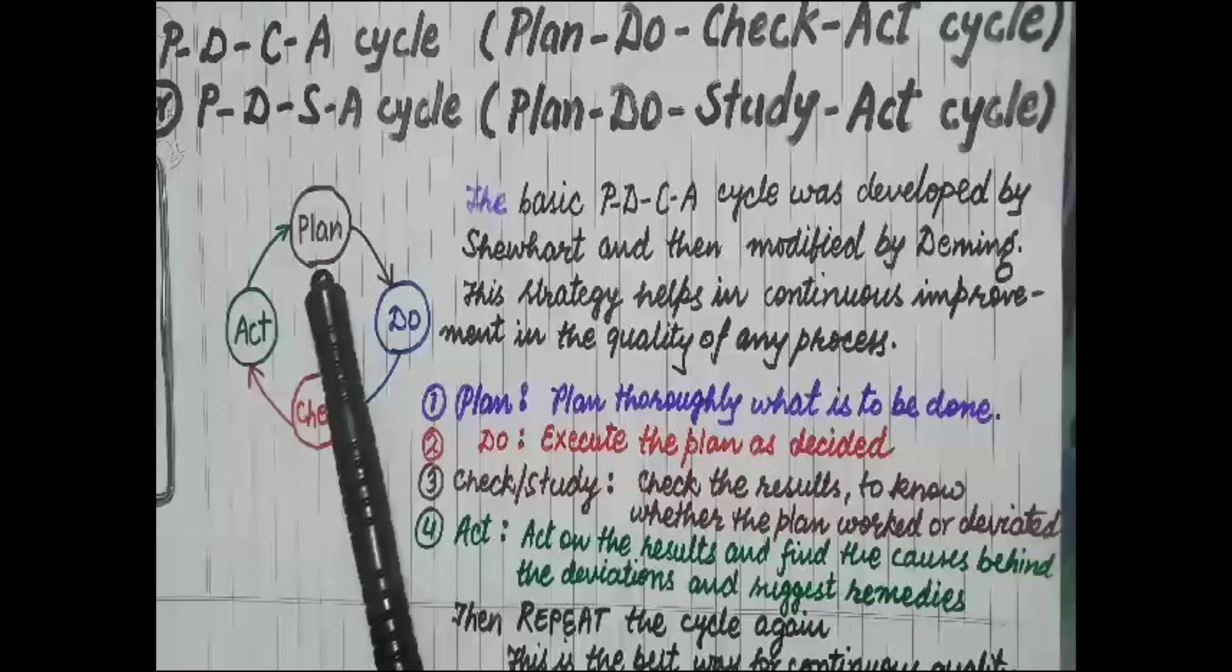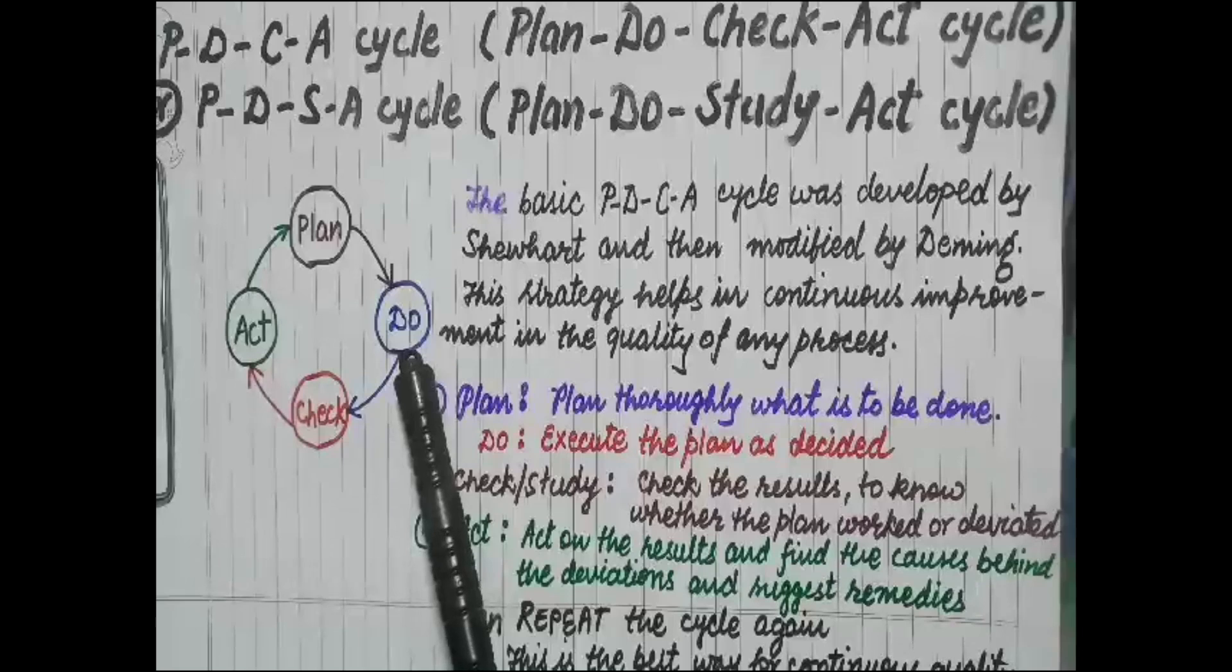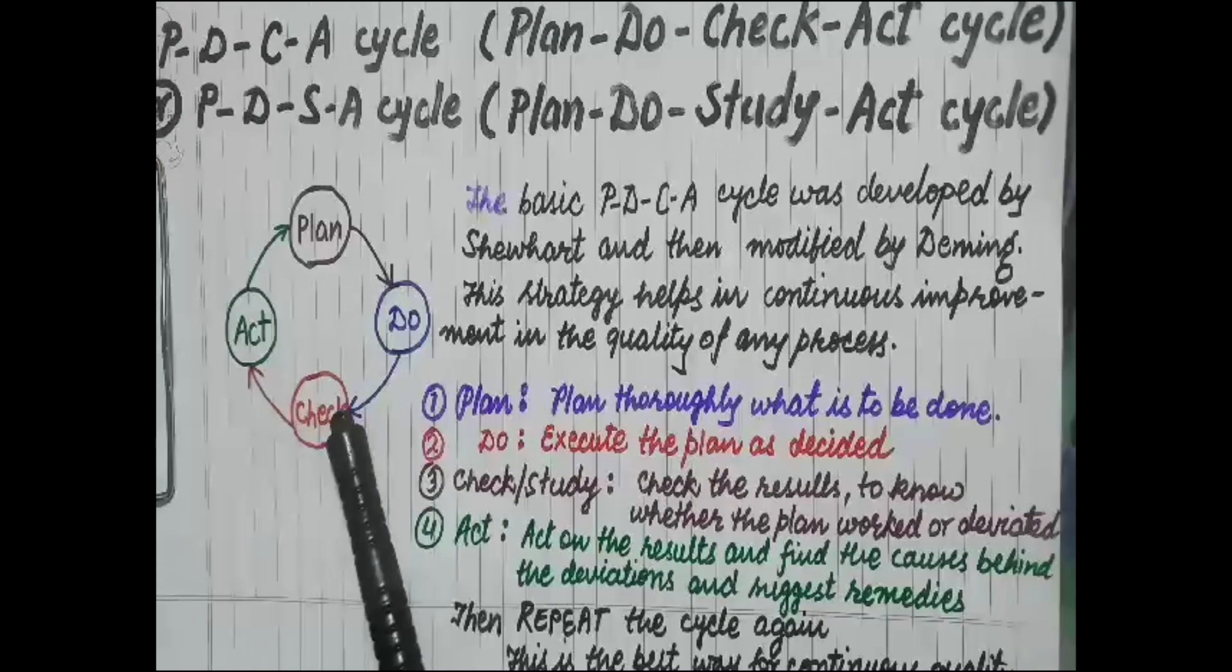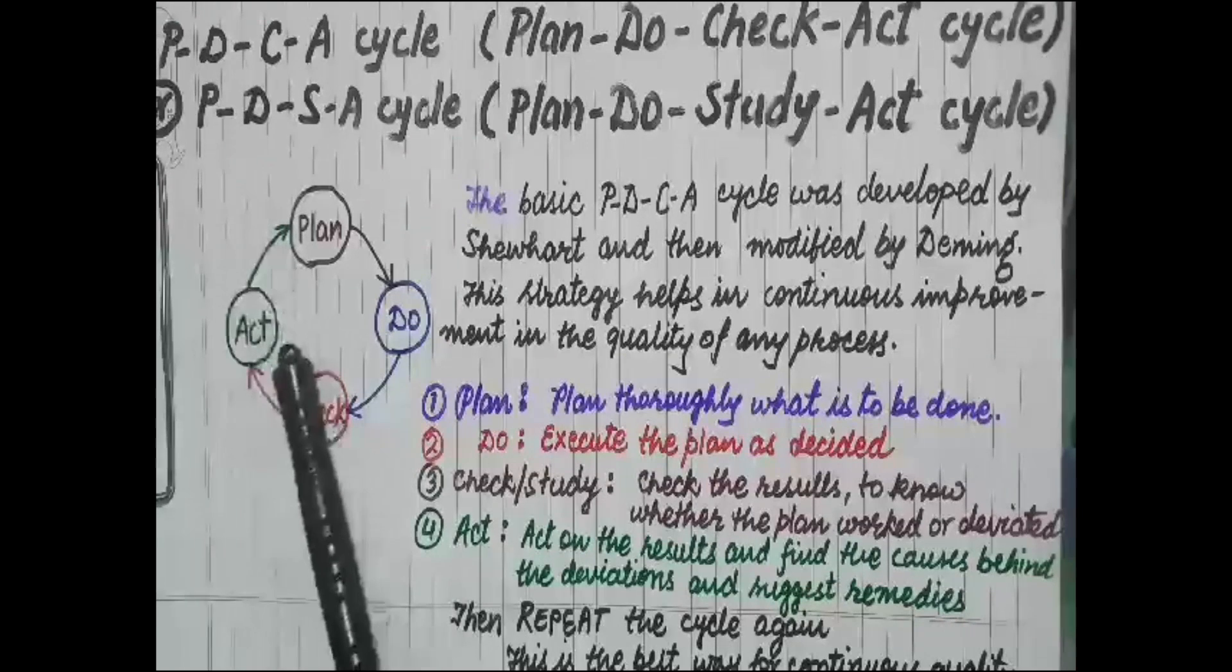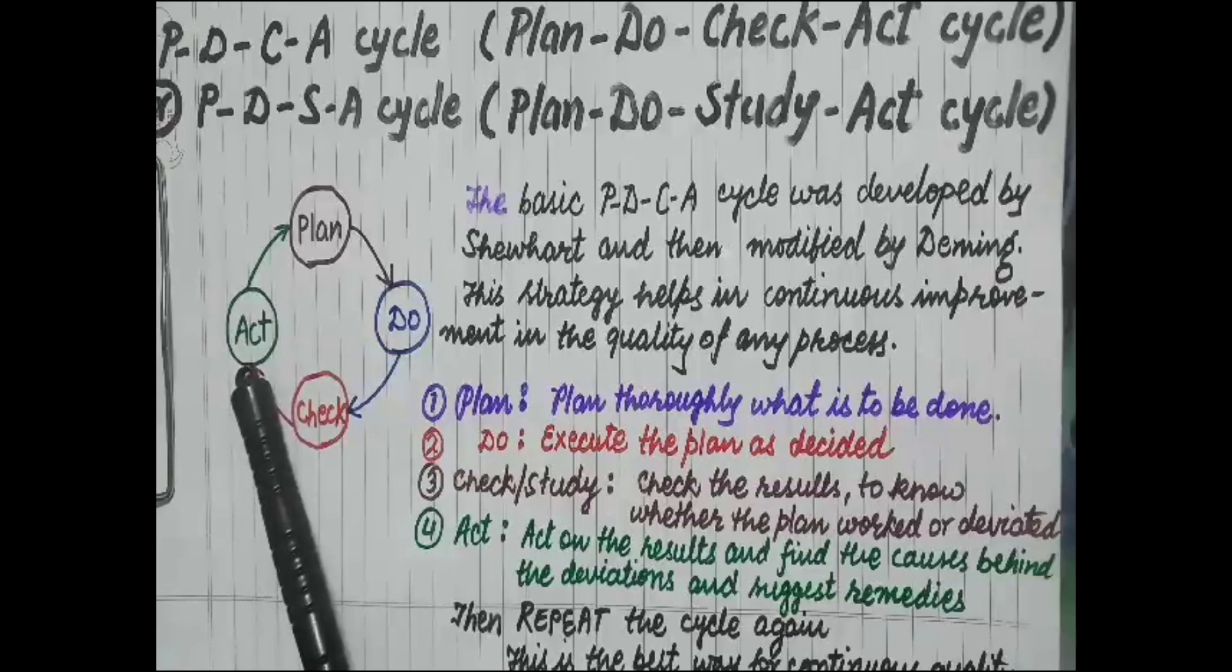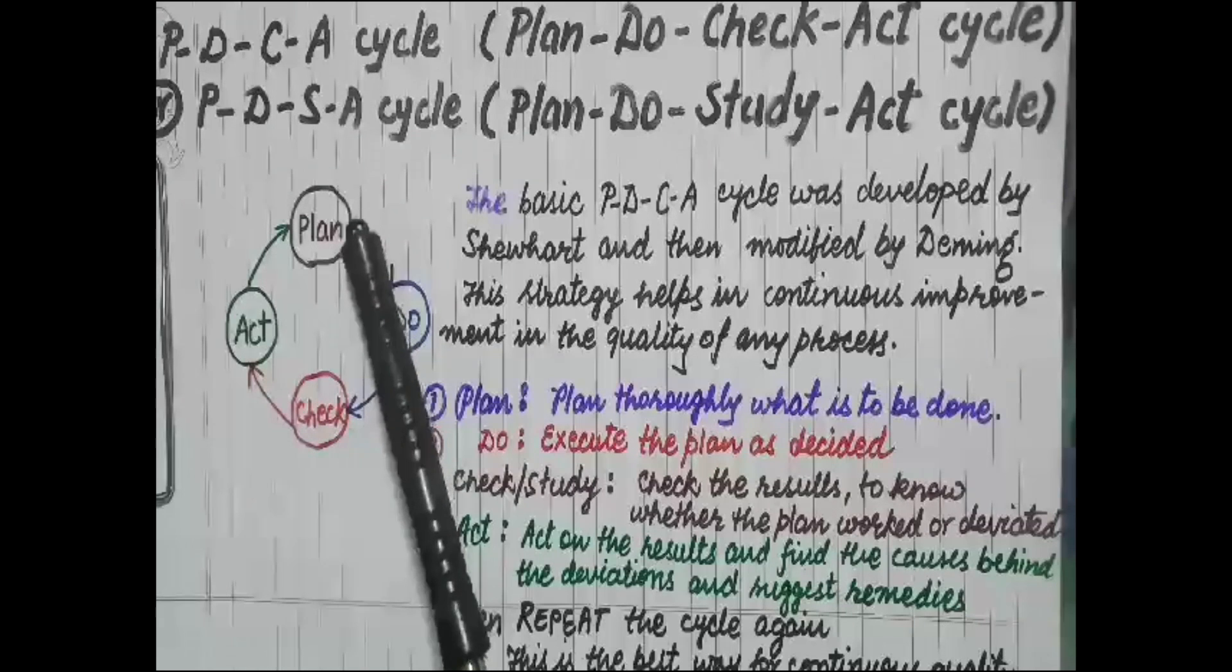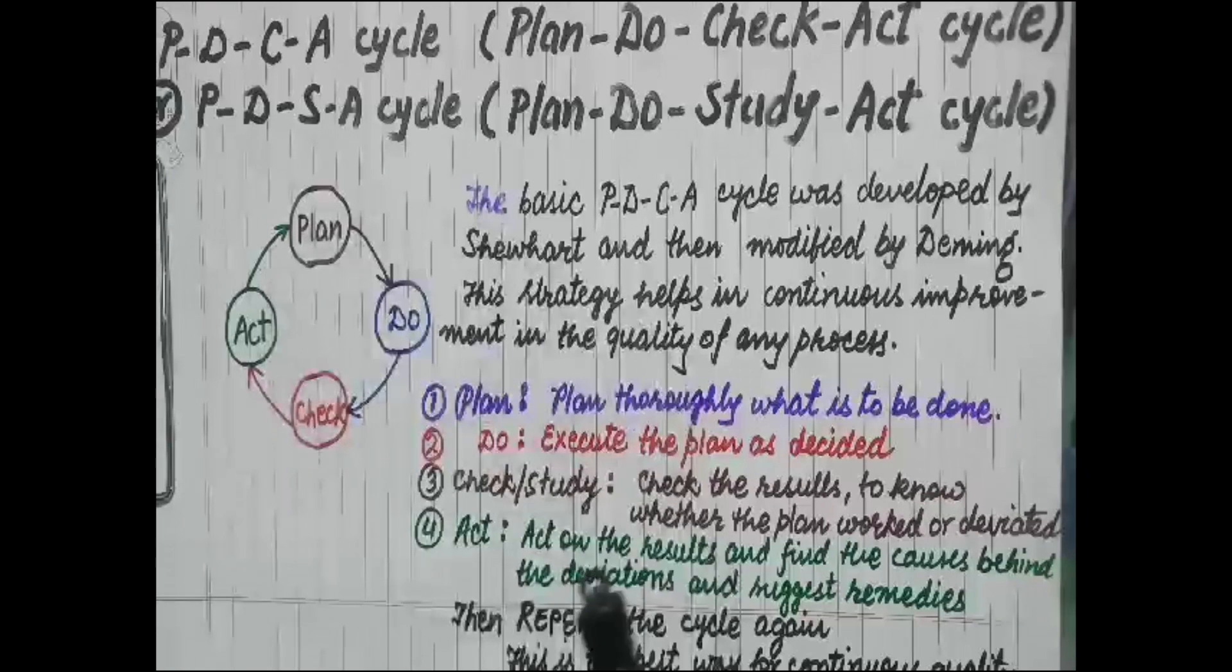not. If there is some deviation, we have to find out the causes behind it. If there are causes, we have to take care of them while framing another plan for another cycle. So this is a very good continuous quality improvement cycle which is used by quality engineers.